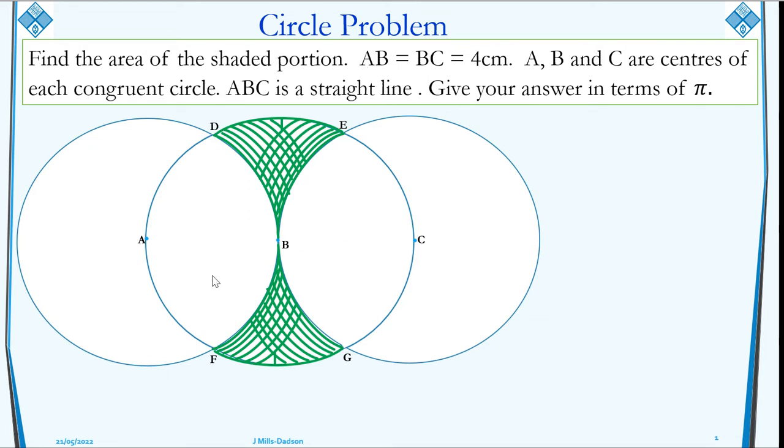We know AB is equal to BC and is equal to 4 cm. A, B and C are the centers of each of the circles. ABC is also a straight line and we are supposed to give our answer in terms of π.